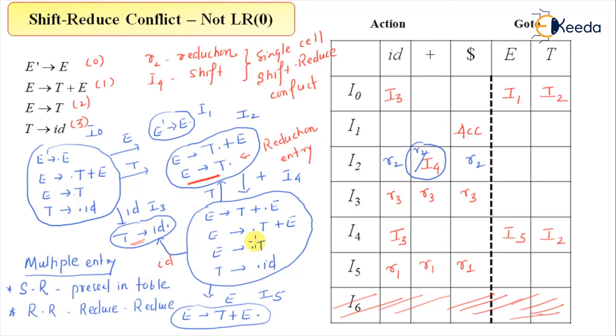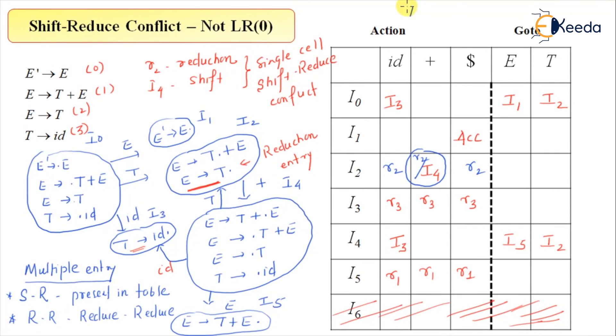So there is some takeaway from this: what is leading to a shift-reduce conflict? And that conflict is a category of SR, or shift-reduce conflict, leading to a conflicting situation. And this grammar is not LR0. So this given grammar is not LR0.